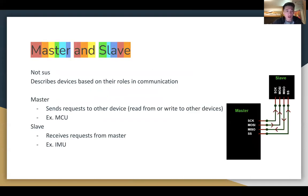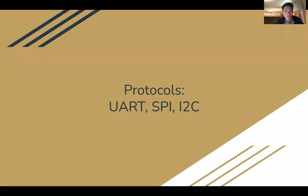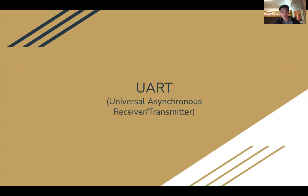Master and slave describes devices based on how they're used in our communication systems. The master is the device that sends requests — read or write requests — to other devices; in our case that's the MCU. The slave is the device that receives requests from the master and is written to or read from; our IMU is that example. The specific protocols we'll be looking at are three: UART, SPI, and I2C.